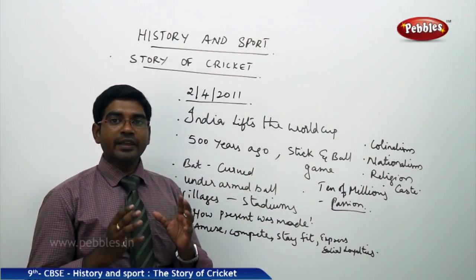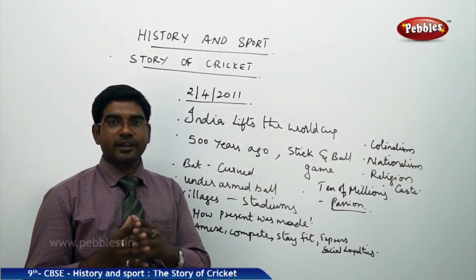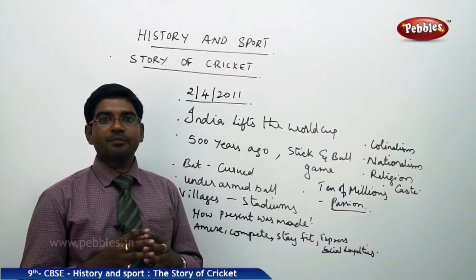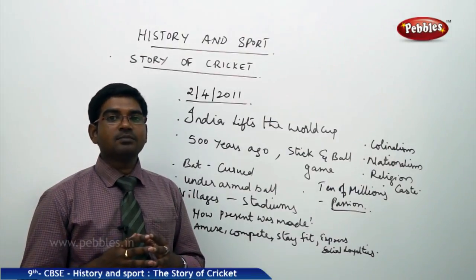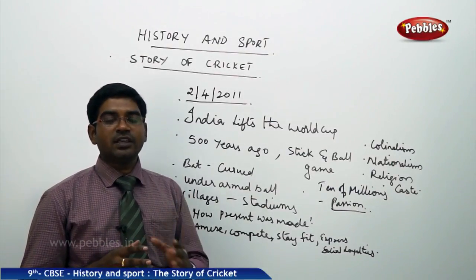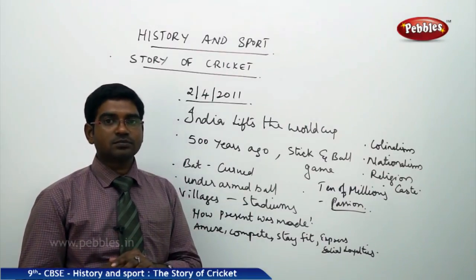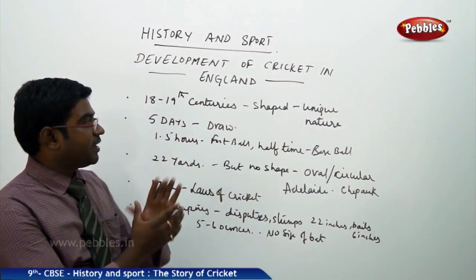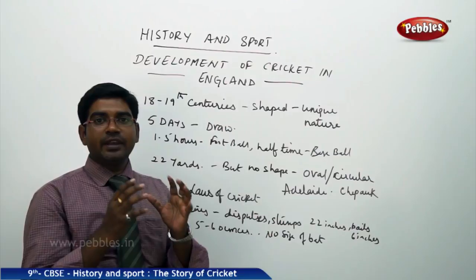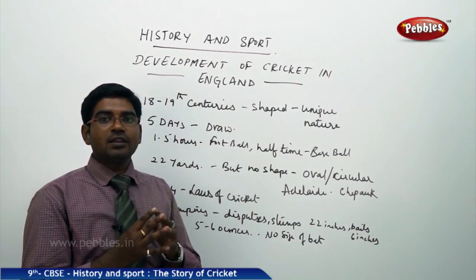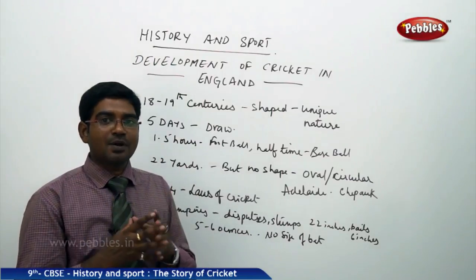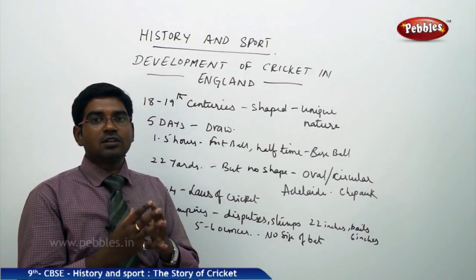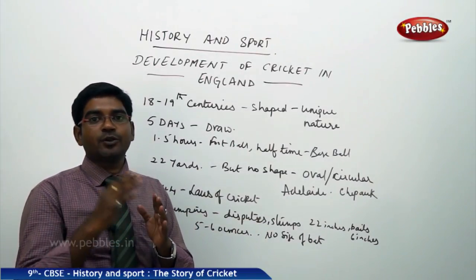All these are also interconnected with the story of cricket. First, we will discuss how the game of cricket developed in England, how it became a famous sport, and later we will see how it spread to India. The 18th and 19th centuries shaped the game and gave it a unique nature. Earlier the game was different, but as centuries passed, the codification of the game happened, and today it has very special features which are rare and unique compared to other games.